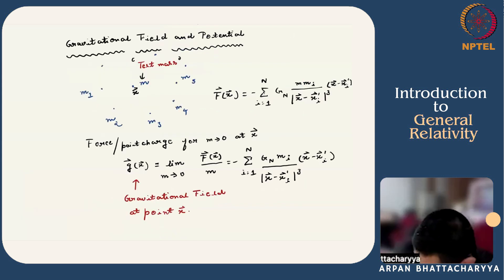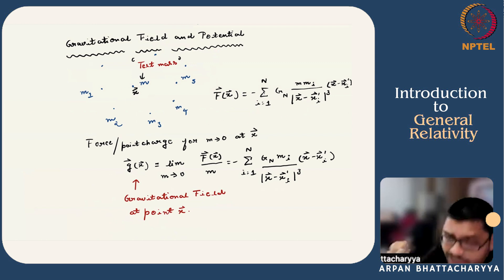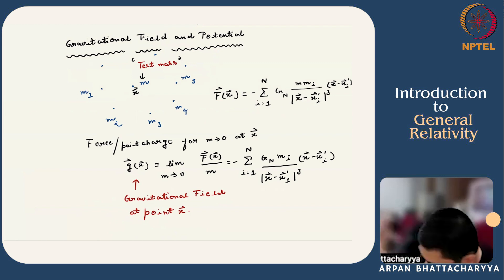Now we will discuss gravitational field and potential. We have a bunch of point particles with the corresponding gravitational masses m1, m2, m3, etc., and we take a test mass m and place it at point x. Then the force on this test mass is given here. In the limit when m tends to 0, that is it is a very small test object, we can define the gravitational field at point x, and the expression is quoted.